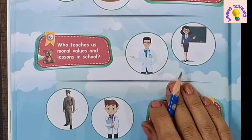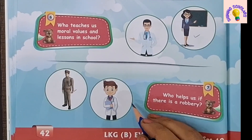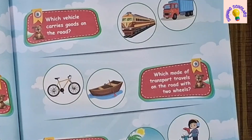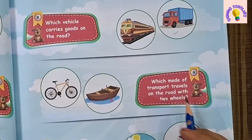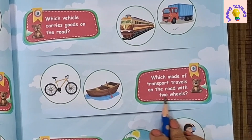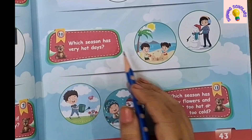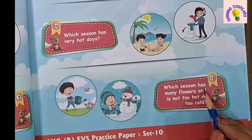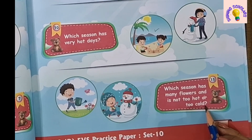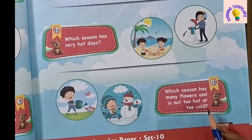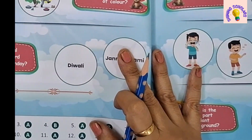Who teaches us moral values and lessons in school? Teacher. Who helps us if there is a robbery? Policeman. Which vehicle carries goods on the road? Truck. Which mode of transport travels on the road with two wheels? Bicycle. Which season has very hot days? Summer season. Which season has many flowers and is not too hot or too cold? Spring season — it is a very pleasant season of the year.